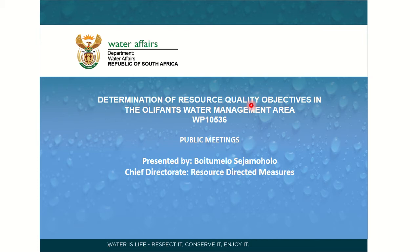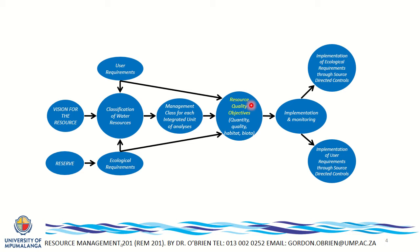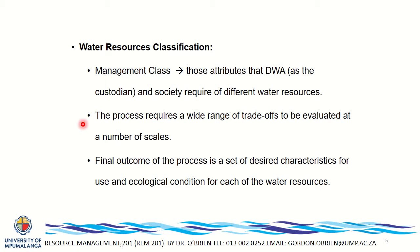All of these introductions are here to help us understand how we achieve a sustainable balance between the use and protection of resources. This is a flow diagram of how the resource-directed measures process operates within the Department of Water and Sanitation. This presentation has already been saved onto your Moodle platform, and this diagram is very important.